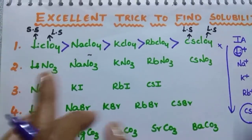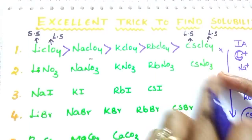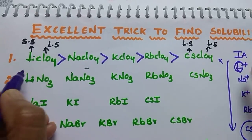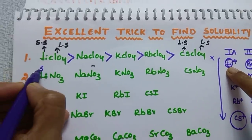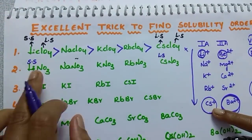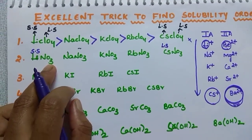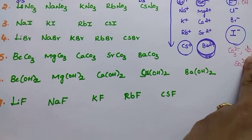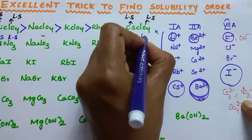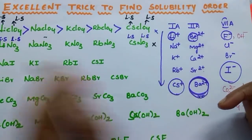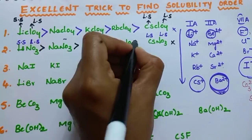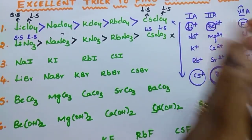Next example: LiNO₃ vs CsNO₃. In LiNO₃, Li⁺ is small size. In CsNO₃, Cs⁺ is large size. NO₃⁻ is a large-size anion. So for LiNO₃: small cation + large anion = large difference = more solubility. For CsNO₃: large cation + large anion = less difference = less solubility. So LiNO₃ has more solubility than CsNO₃.